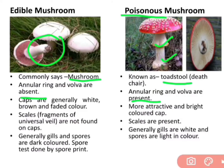Caps of edible mushrooms are generally white, brown, and faded in color. While in poisonous mushrooms, the cap is more attractive and bright colored. Jabki poisonous mushroom mein yeh attractive and bright hote hain — jaise ki picture mein red bright colored cap hai.